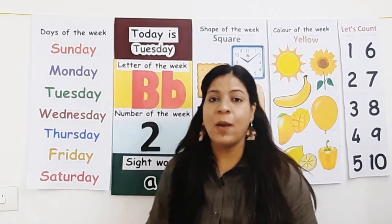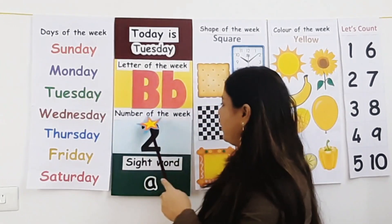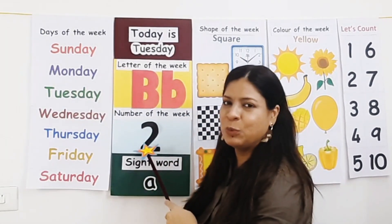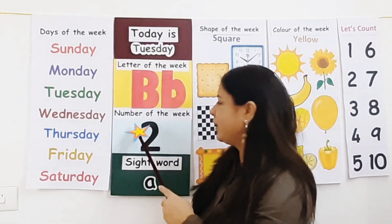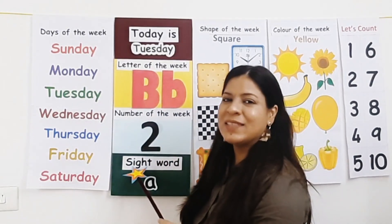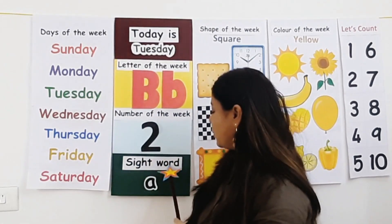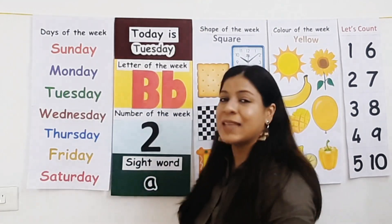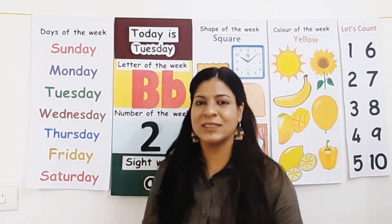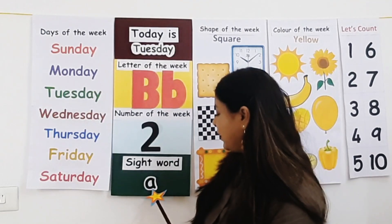Now let's see the number of the week. Number of the week is number 2. Now let's see the sight word. Sight word is U. Read along with me: U.